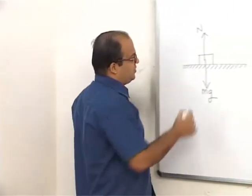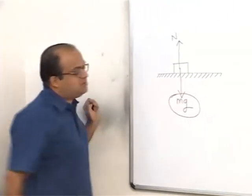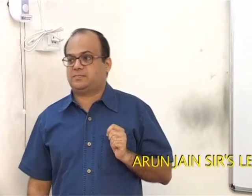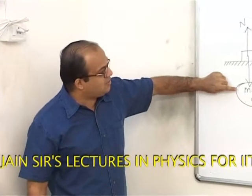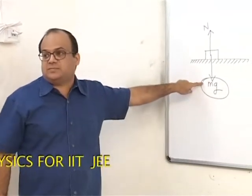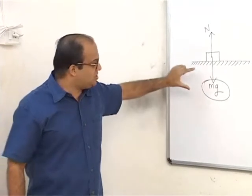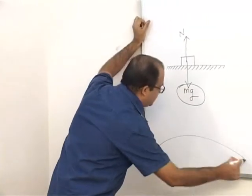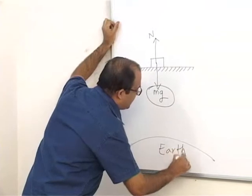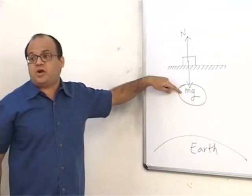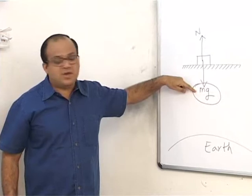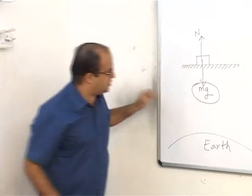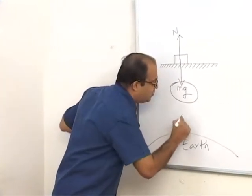So which force is the action-reaction pair for this Mg? You must understand that this Mg is acting because of the earth. If the earth were not there, this force would not have been there. So the action-reaction pair for this Mg is the force exerted by this block on the earth. Now that will also be equal to Mg.